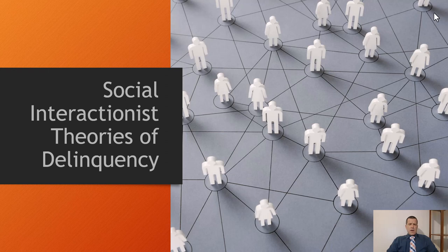Hello and welcome. Today we're going to be looking at social interactionist theories of delinquency. To break down the sociological theories, we generally have our three major theories in sociology: our macro theories like functionalism and conflict theory, and then you have your micro theories like symbolic interactionism.